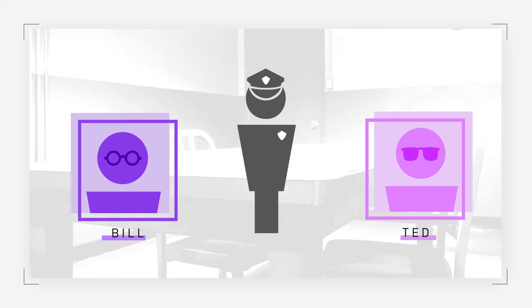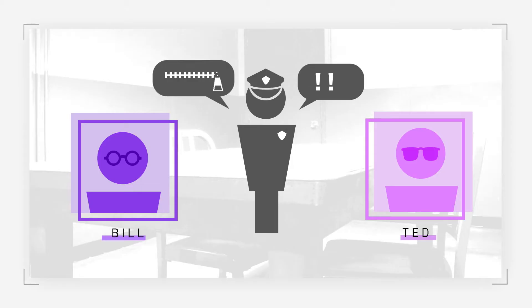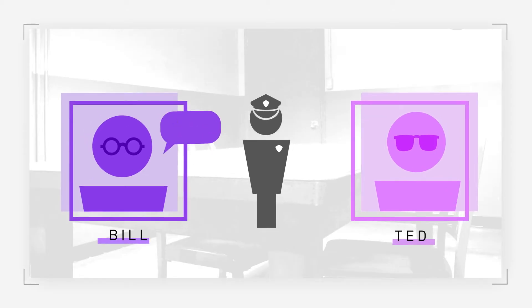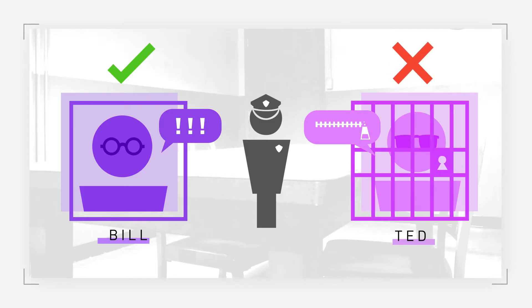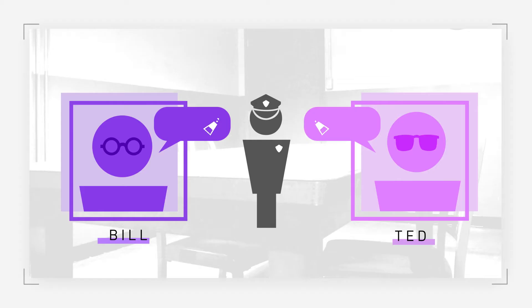Bill and Ted can each choose to either remain silent or confess to the crime. If one of them confesses while the other remains silent, the police will drop the charges against the suspect who confesses and use their testimony to convict the suspect who remains silent, giving him a long sentence. If both remain silent, they will both serve a short sentence. They are also informed that the other suspect has been offered the same terms.